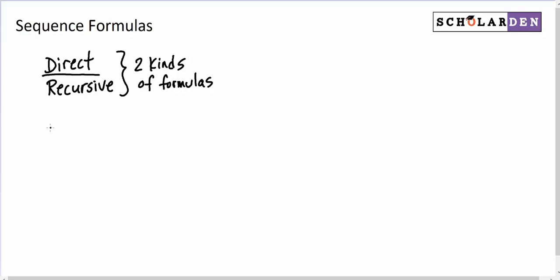We would write that this way. We'd say the term we're interested in is 2 times the previous term. Now, how would I write the previous term? Well, that's the term N minus 1. That's the term before the N term. And then I said minus 4.